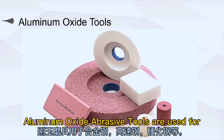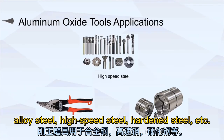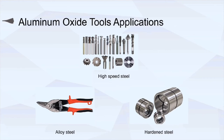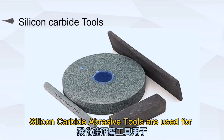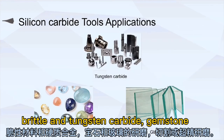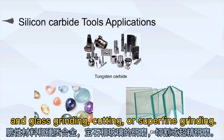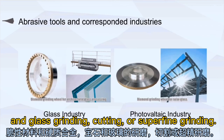Aluminum oxide abrasive tools are used for alloy steel, high-speed steel, hardened steel, etc. Silicon carbide abrasive tools are used for brittle materials and tungsten carbide, gemstone and glass grinding, cutting, or superfine grinding.